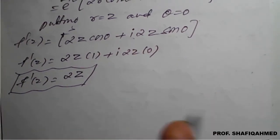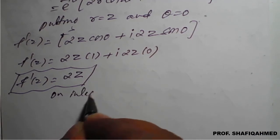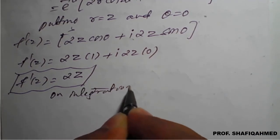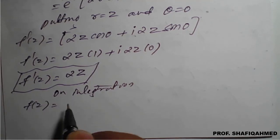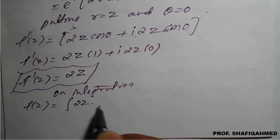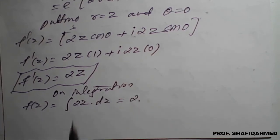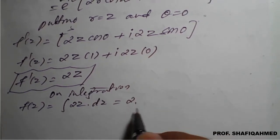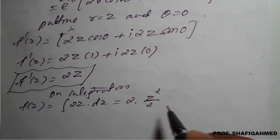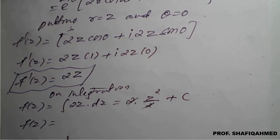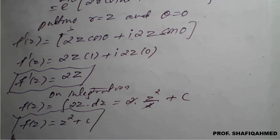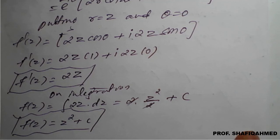On integration, f(z) = ∫2z dz. Since 2 is a constant, integration of z gives z²/2, so f(z) = 2·(z²/2) + c. The 2 cancels, giving f(z) = z² + c. This is the required analytic function.